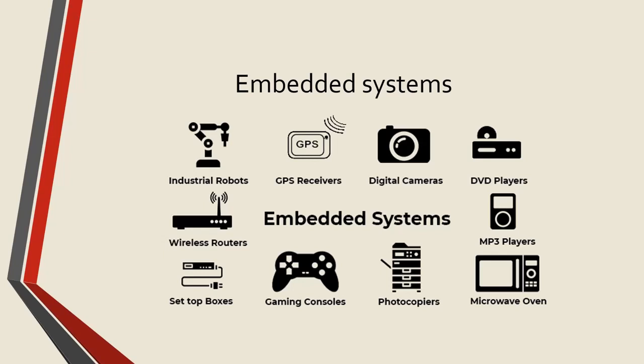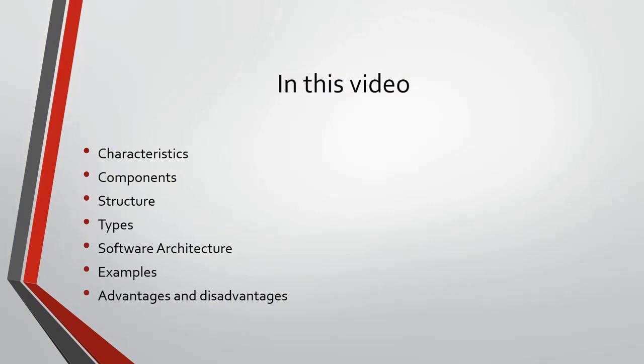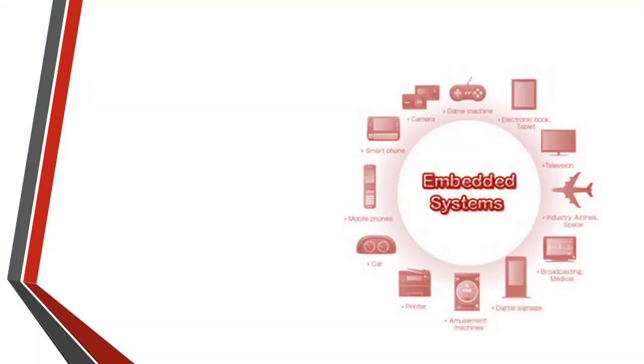As the name suggests, 'embedded' means something that is attached to another thing. An embedded system can be thought of as a computer hardware system having software embedded on it. An embedded system can be independent or part of a larger system. In this video you will learn different characteristics of an embedded system, the components in an embedded system, the hardware structure, different types, and also the software architecture inside an embedded system, along with examples and the advantages and disadvantages.